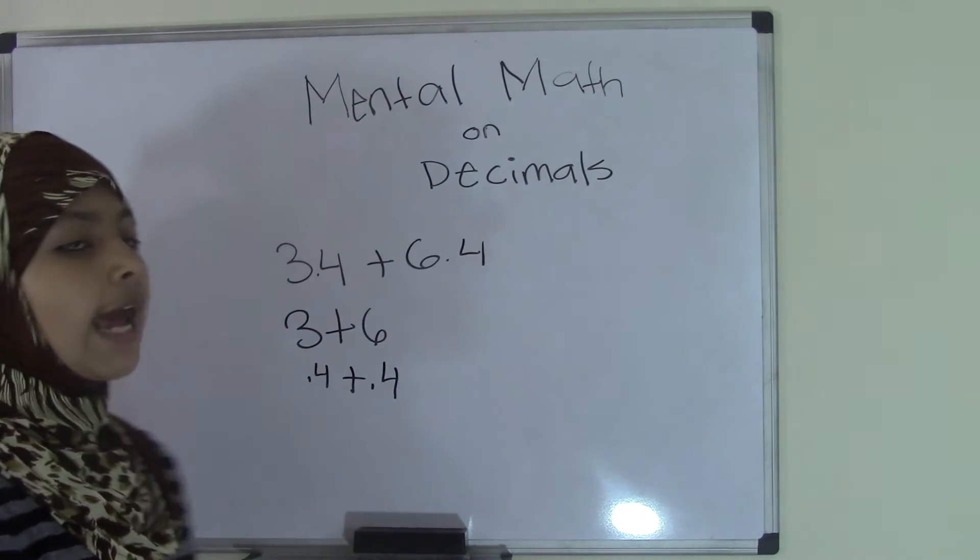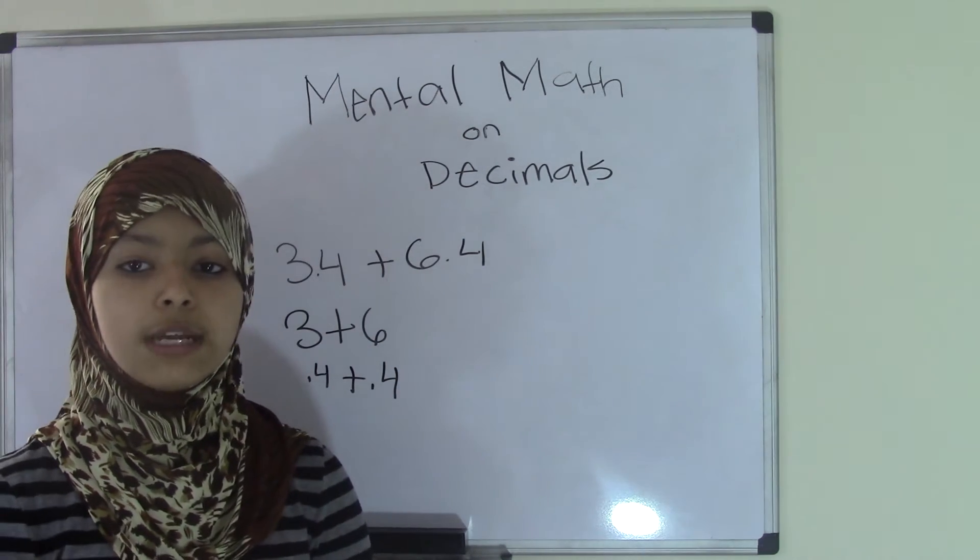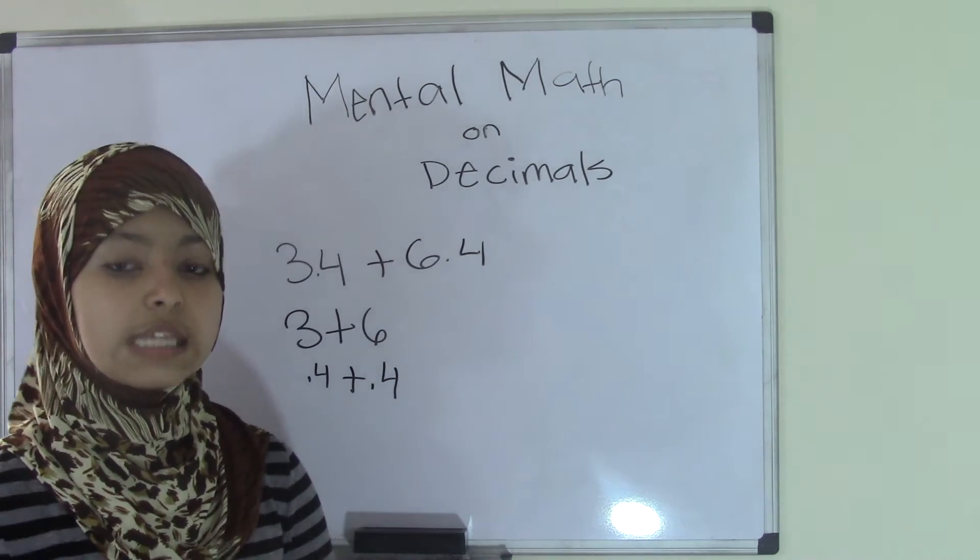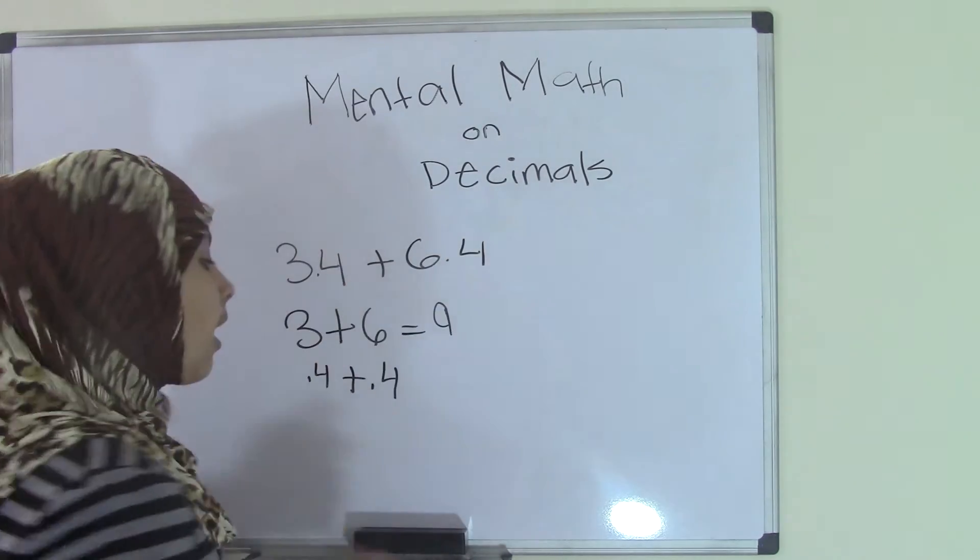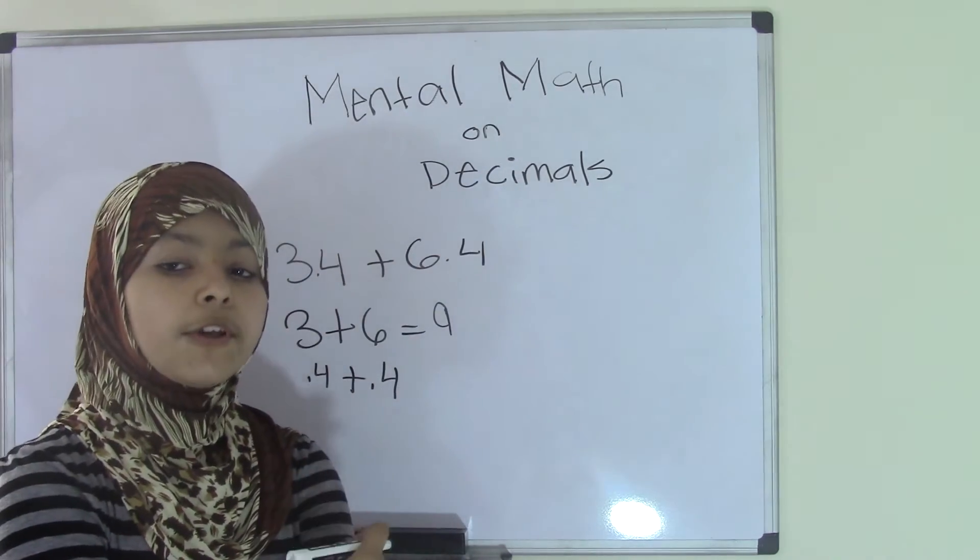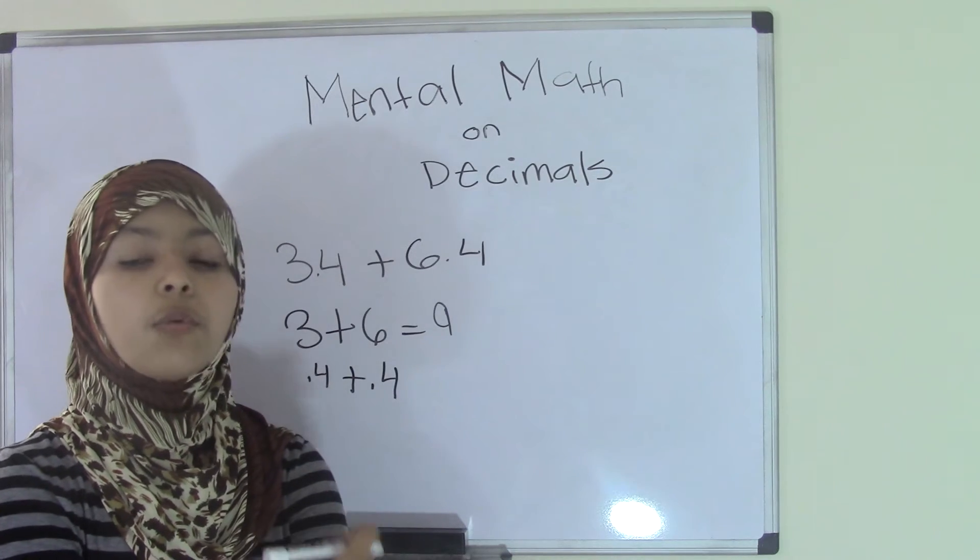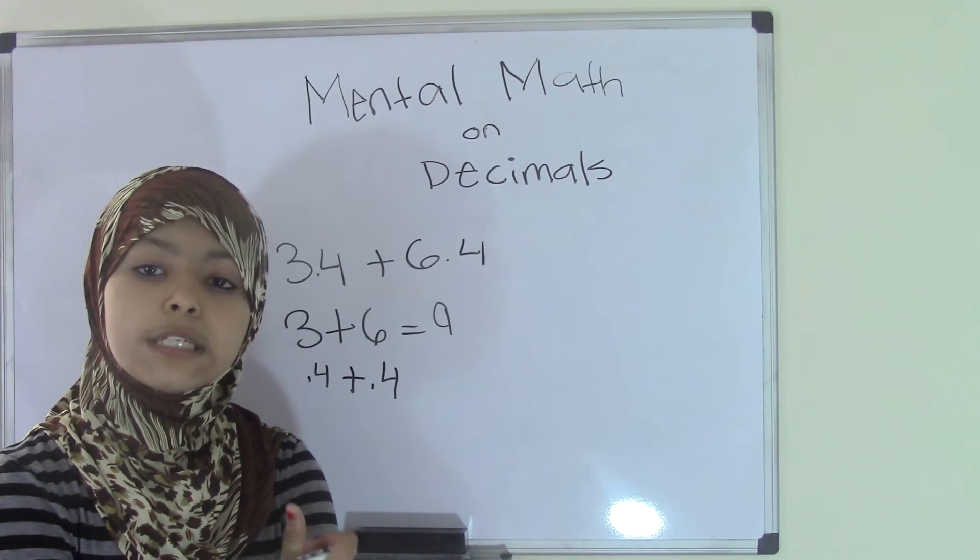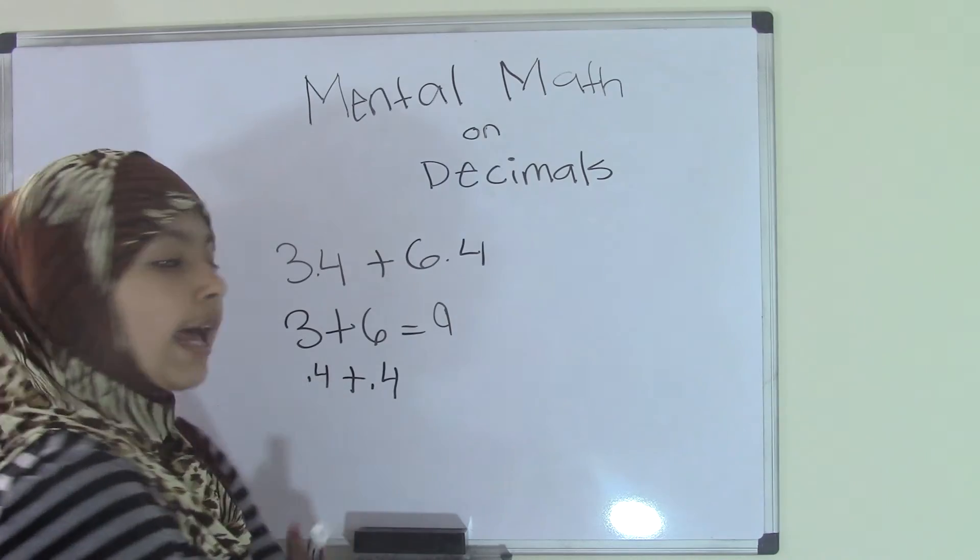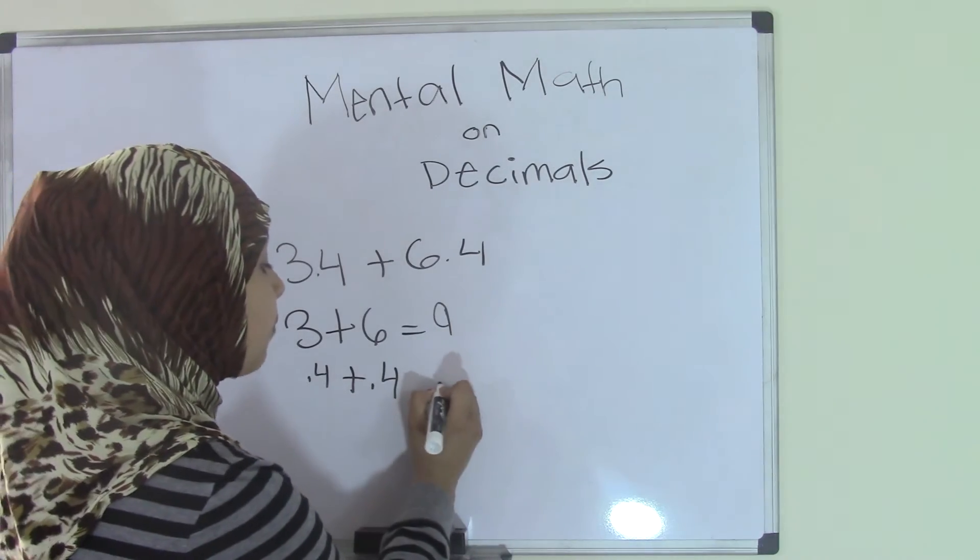Now, let's add 3 and 6 in our brain. We know that 3 plus 6 equals 9, so we'll write that down. And then if we add 0.4 plus 0.4, we will get 0.8 because 4 plus 4 equals 8. You just have to add the decimal point, so we get 0.8.